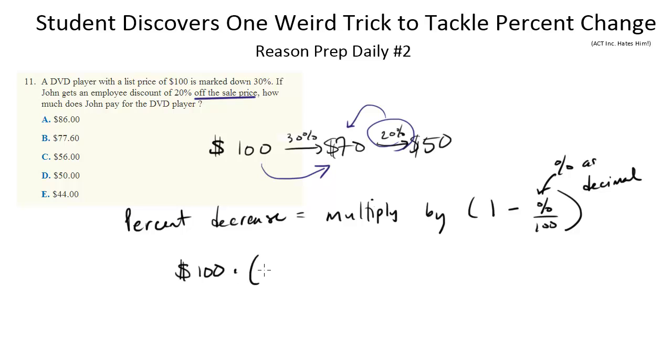This is the same thing as $100 times 0.7, which is $70, which of course is what we got here.